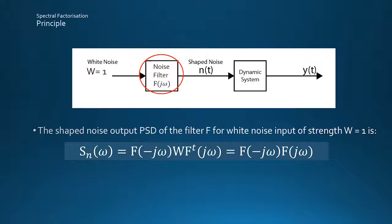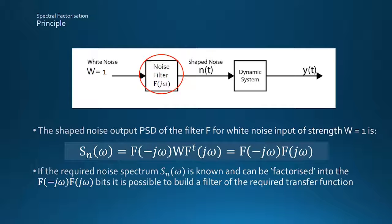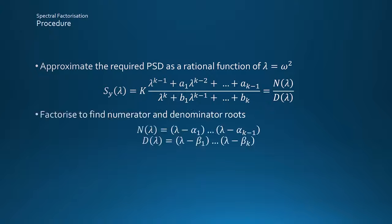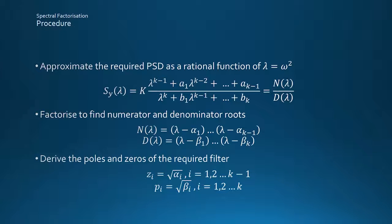The aim is to create a suitable filter F to produce the actual noise N that drives the system from white noise, so that F can then be included within the dynamic model of the system, and all of the previous results can be used. Applying the PSD formula for unity strength white noise shows the filter output to comprise F multiplied by its conjugate, so that to find F we need to factor S into the equivalent conjugate bits.